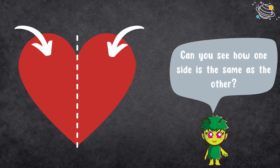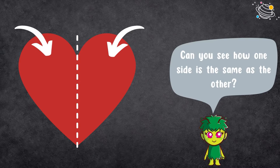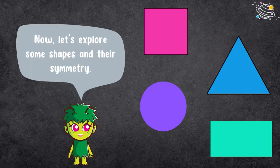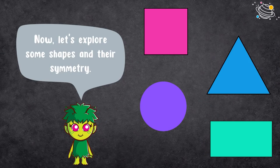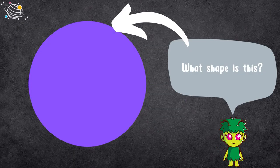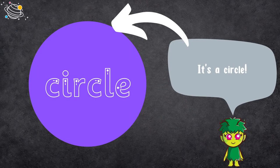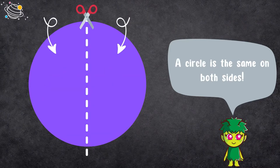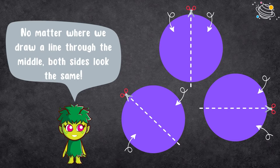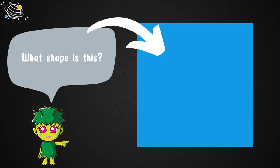Now let's explore some shapes and their symmetry. What shape is this? It's a circle. A circle is the same on both sides. No matter where we draw a line through the middle, both sides look the same.